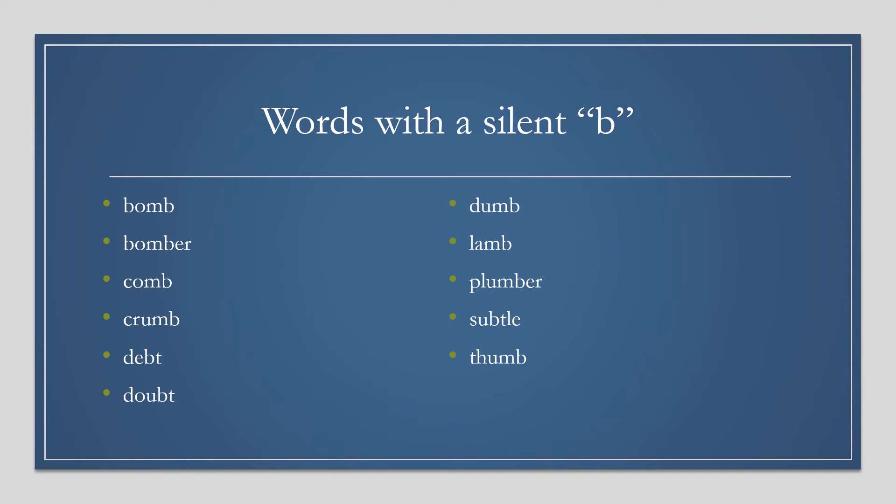Take for example the consonant B, which is silent in these words: bomb, bomber, comb, crumb, debt, doubt, dumb, lamb, plumber, subtle, thumb.